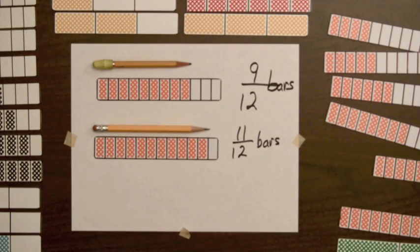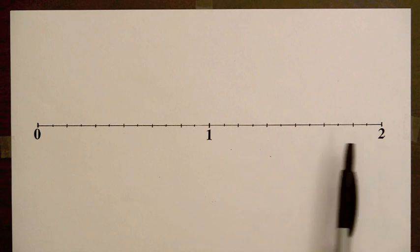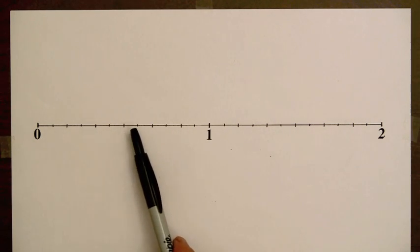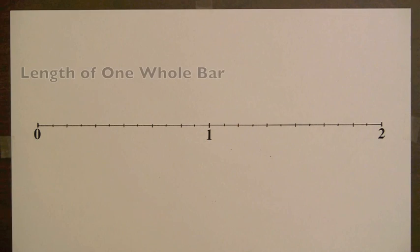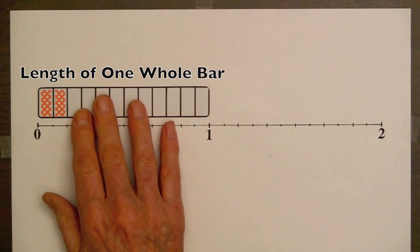Next, we'll measure with the bars to construct a number line. This is the beginning of the number line from 0 to 2. And between 0 and 1 there are 1, 2, 3, 4, 5, 12 parts. This length from 0 to 1 has the same length as one whole bar.